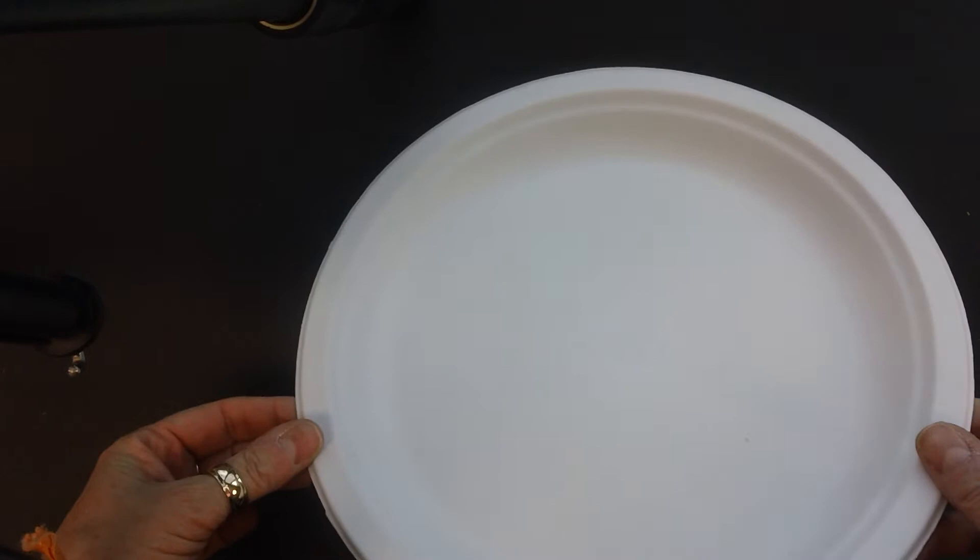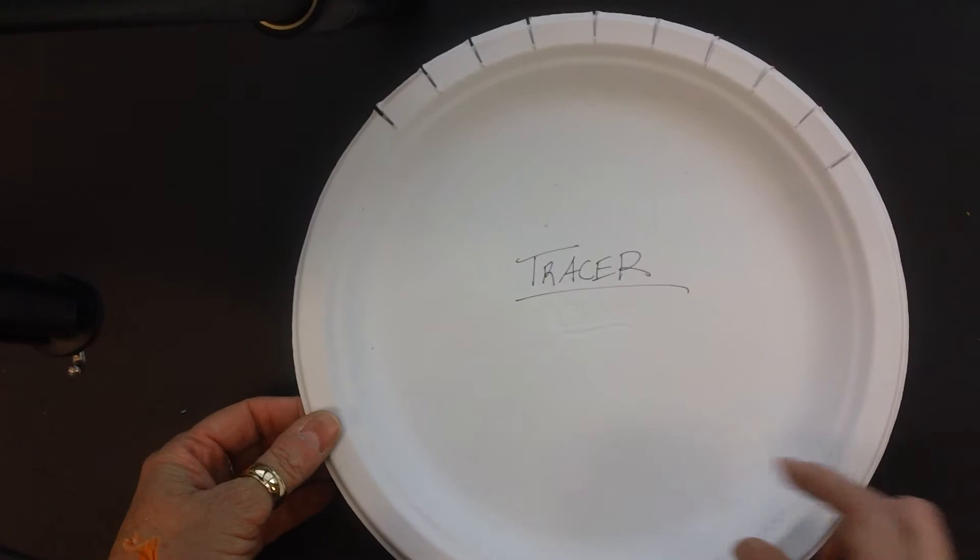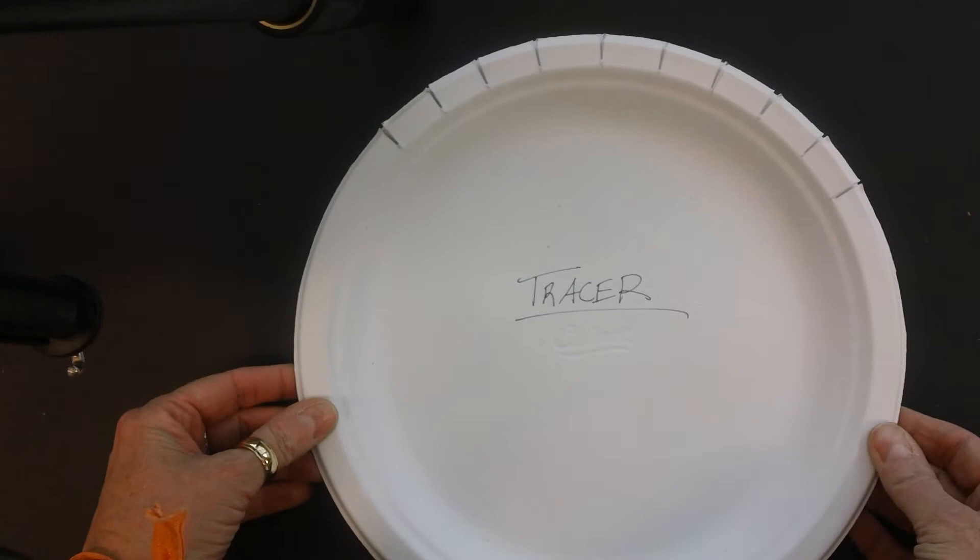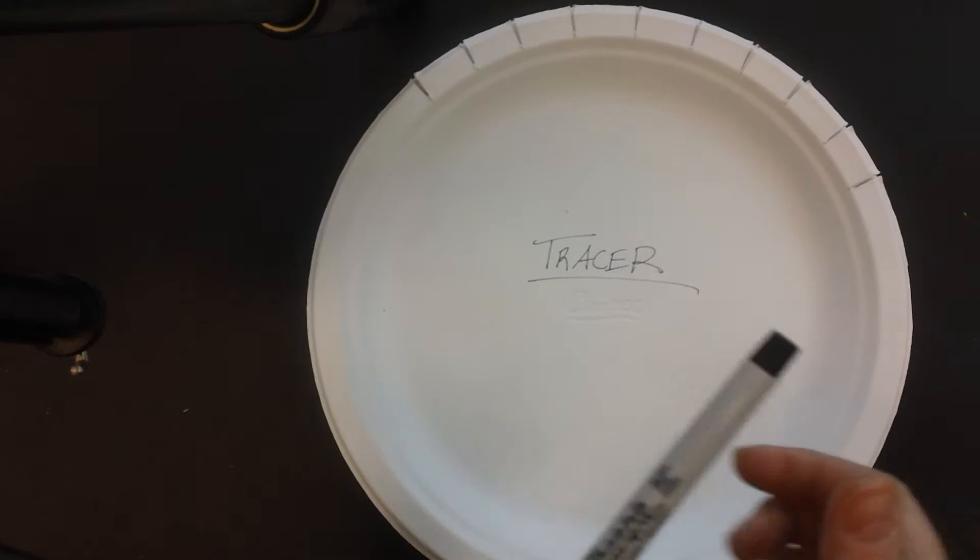What you're going to need is a plate. This is a Chinette paper plate, it's a little bit thicker. You're going to need this one that is labeled tracer, and why it's a tracer is I've cut these slits a little bit wider so you can easily draw through them.